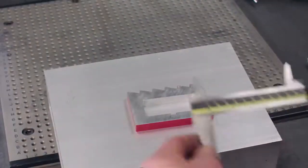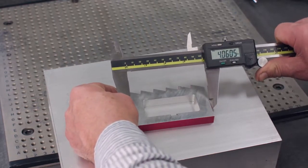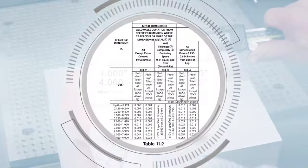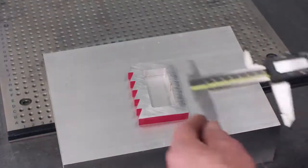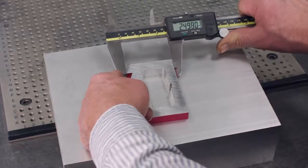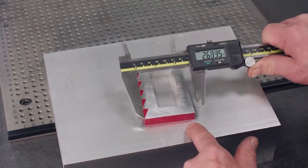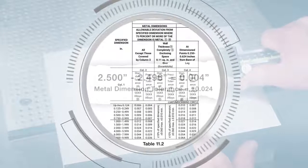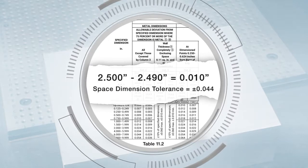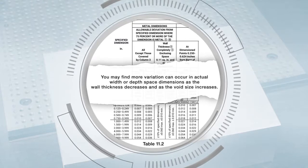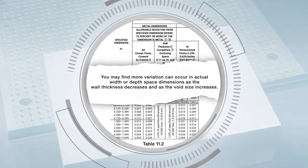Measuring this part across the 4 inch dimension, the width is found to be 3.990 inches at the corner or metal dimension, which is within the plus or minus 0.034 inches allowable tolerance. Measuring across the 2.5 inch dimension, the depth is found to be 2.496 inches at the corner or metal dimension and 2.490 inches across the void or space dimension. Both measurements are within the allowable tolerances of plus or minus 0.024 inches metal dimension tolerance and plus or minus 0.044 inches space dimension tolerance. You may find more variation can occur in actual width or depth space dimensions as the wall thickness decreases and as the void size increases.